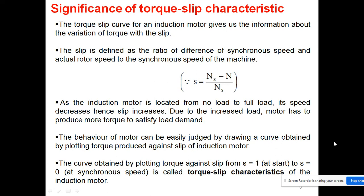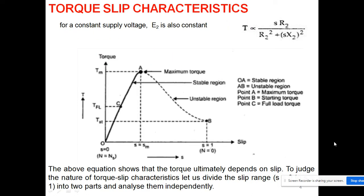The curve is obtained by plotting torque against slip from s = 1 (when rotor speed N = 0, i.e., the starting point) to s = 0 (when N equals synchronous speed Ns). This is called the torque-slip characteristics of the induction motor. Let us see this graph carefully — torque is on the vertical axis and slip on the horizontal axis — and we will discuss this graph in detail.